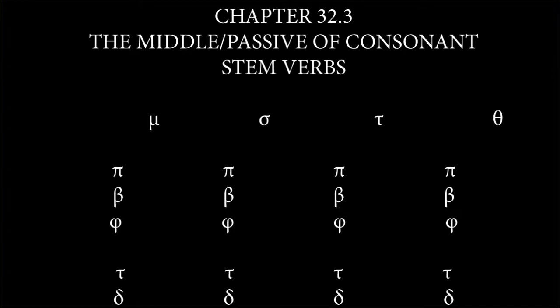Hey everybody, in this lesson we're continuing on chapter 32.3, this is page 223 on Shalmerdine's introduction to Greek, and we're talking about the middle passive forms of consonant stem verbs.